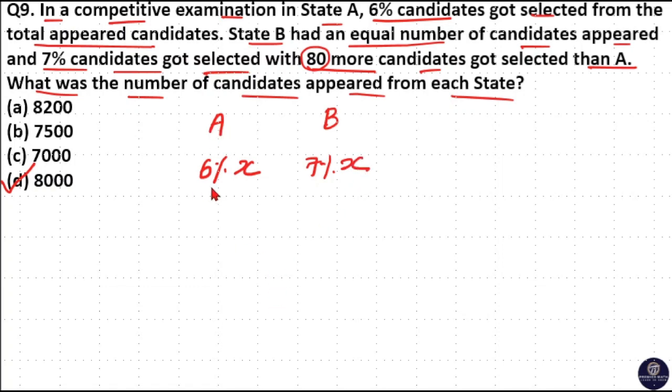That is State A has 6% of X and State B has 7% of X got selected. Now here, State B had 80 more candidates got selected than A. That means difference between these two states selected candidates are 80. That is 7 minus 6, 1% is 80. Then 100% is 80 into 100, 8000. So option D is your answer.